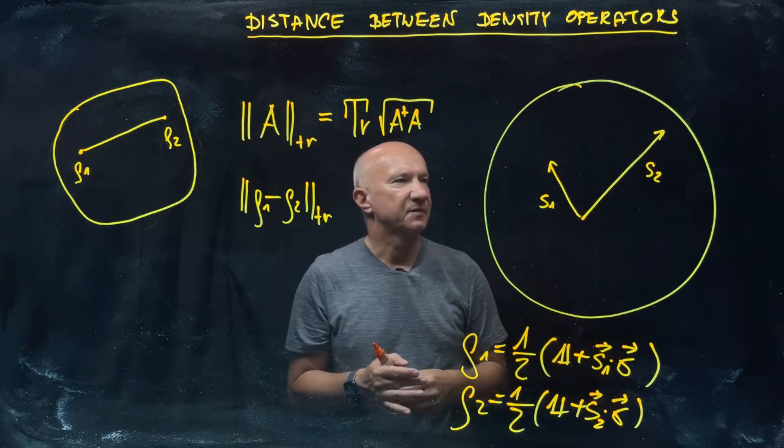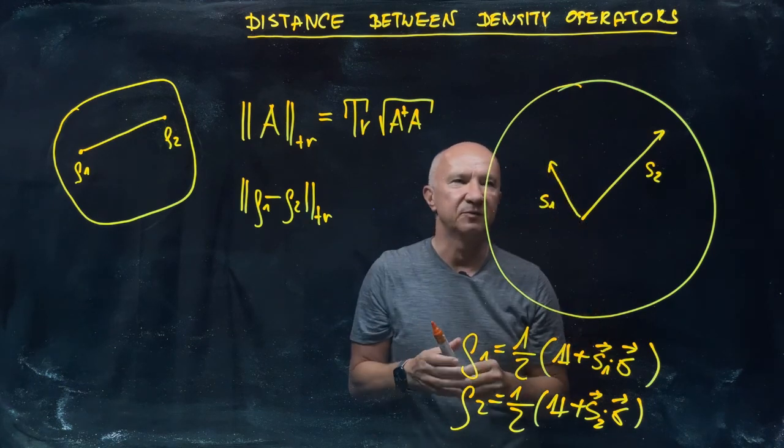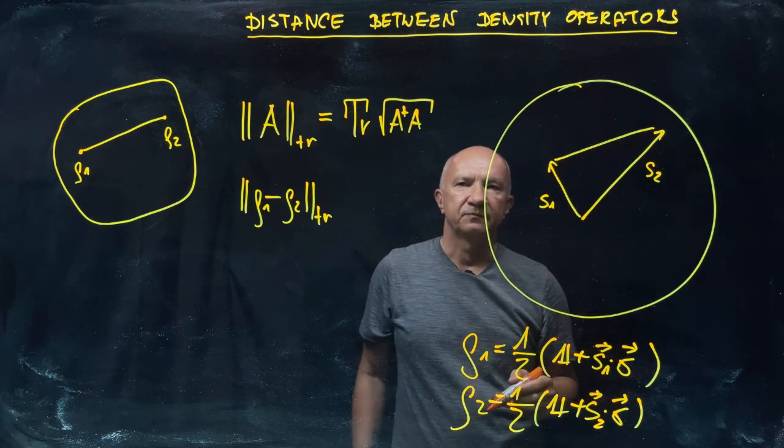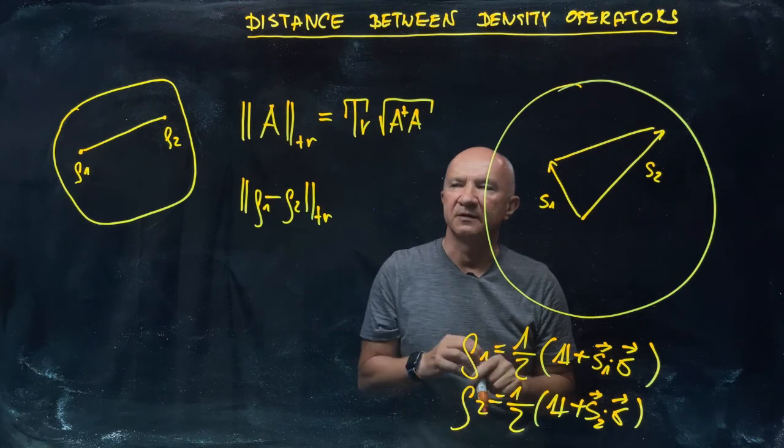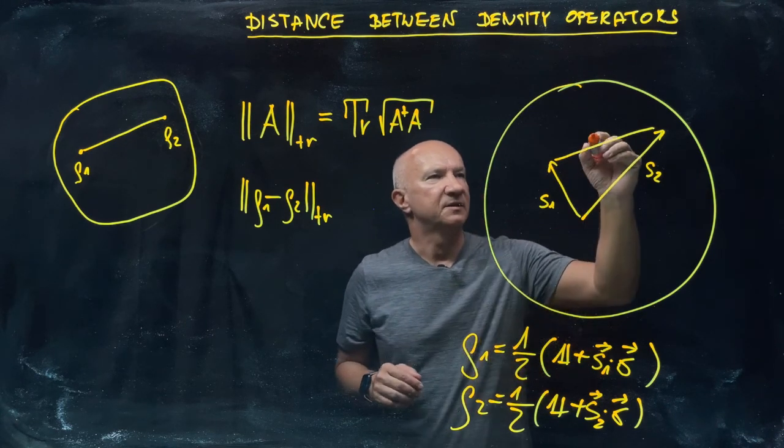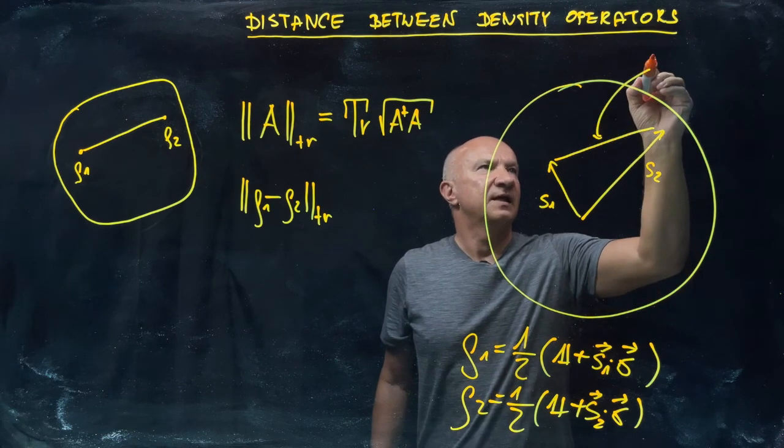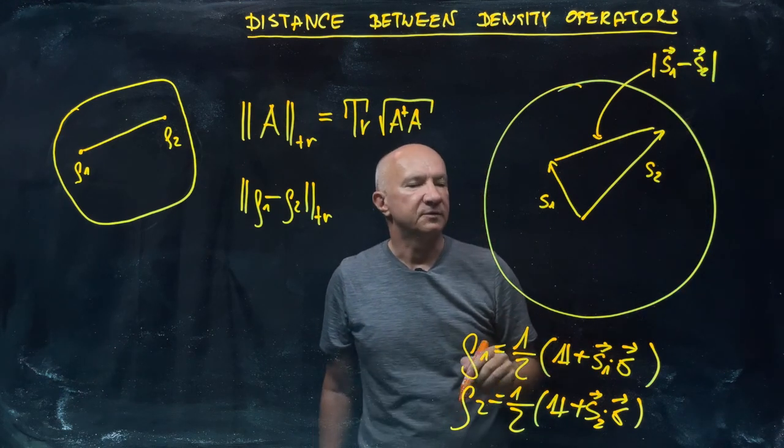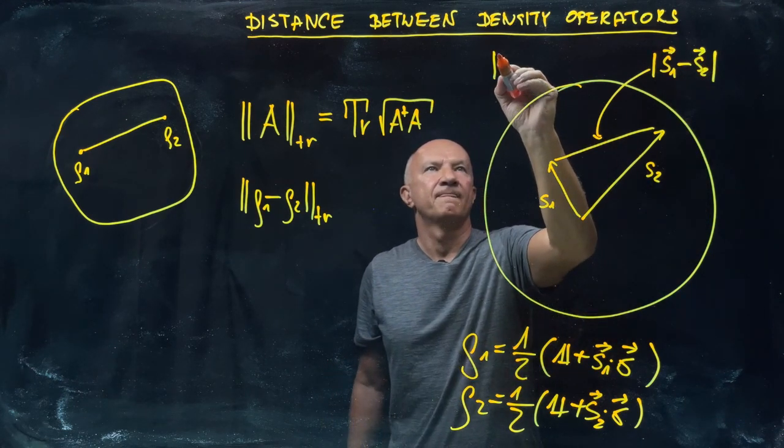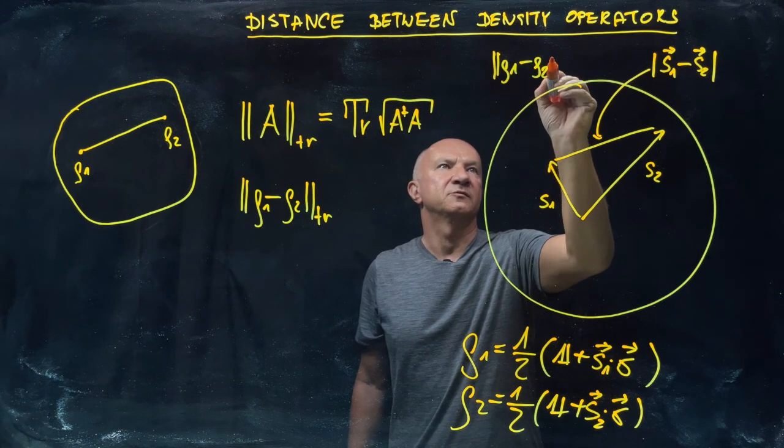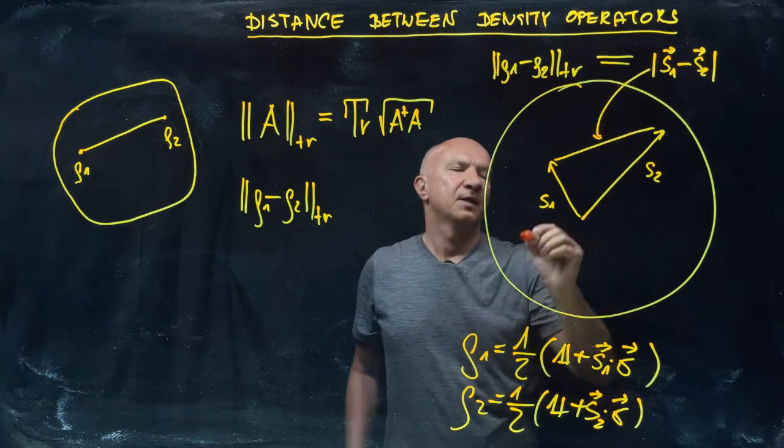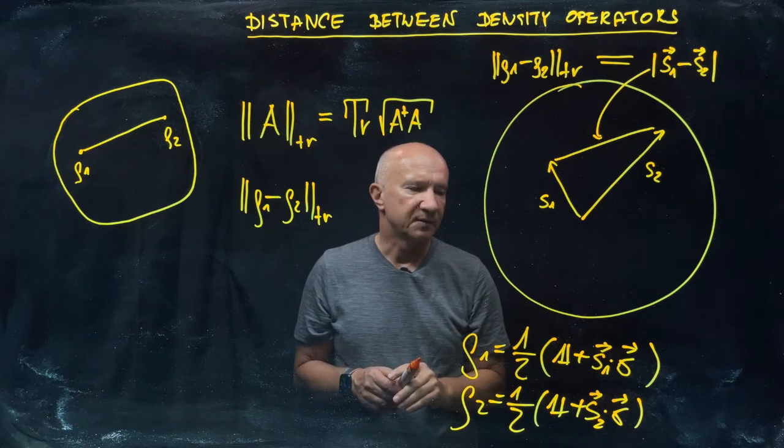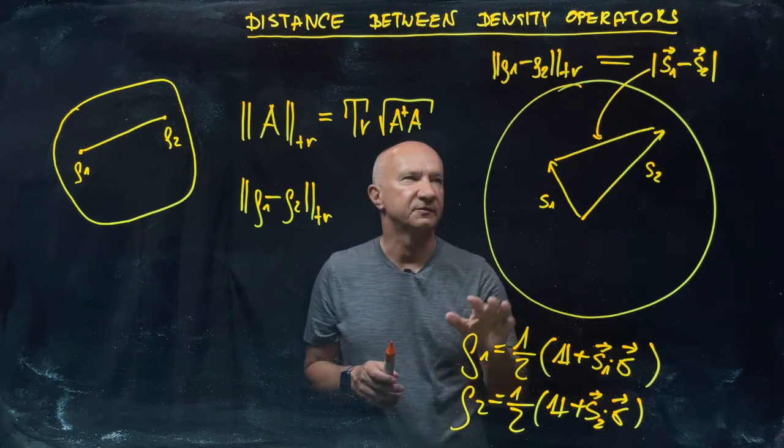The pure states given by projectors on state vectors are on the surface of the Bloch sphere, but the mixed states are vectors which lie inside, points inside the Bloch sphere. Given those two, the difference between them, the length of s₁ - s₂, is equal to the trace distance ||ρ₁ - ρ₂||tr. That's for qubits.